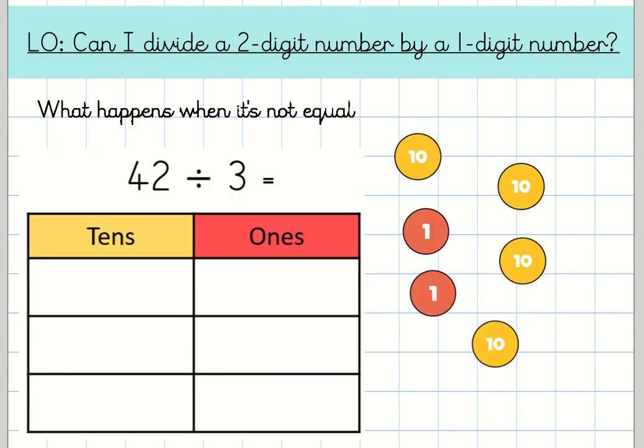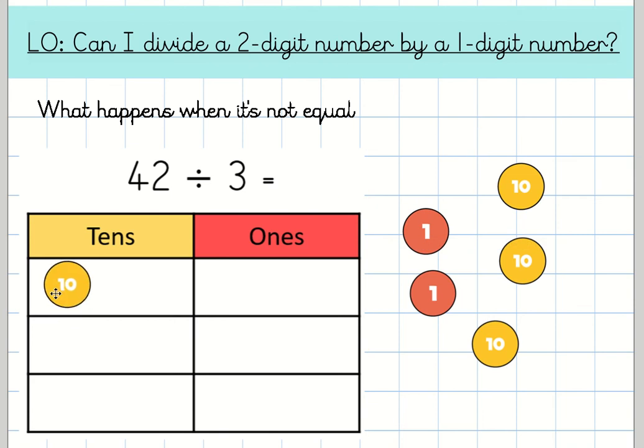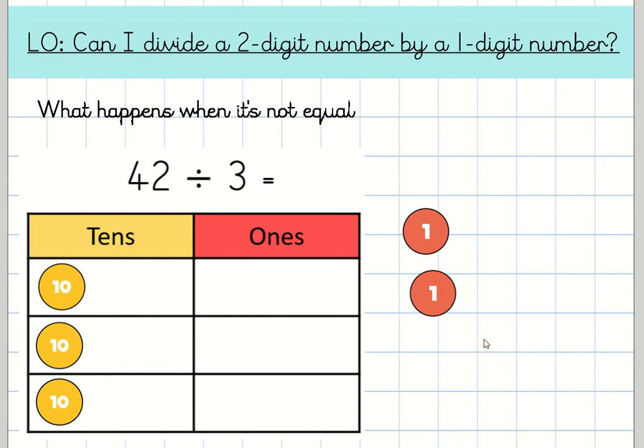So what I'd like you to do is have a go at pausing this video and have a go yourself. But what you're going to notice this time is that it's not quite equal because we're doing 42 divided by 3. And the first thing you might notice is if we focus on the tens and we need to divide 40 into three groups, we can put 10 in each group, but we've got 10 left over and we've also only got two ones, so we can't share that equally. So have a think about what it is we might need to do. Hopefully you might have thought of the word exchange, and we know that we can exchange one ten for how many ones? Have you said 10? Hopefully. So we can exchange one ten for 10 ones.